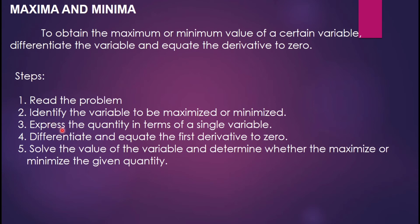Step three: express the quantity in terms of a single variable — for example, problems involving formulas for areas and volumes. Then differentiate and equate the first derivative to zero. Step five: solve the value of the variable and determine whether it maximizes or minimizes the given quantity.